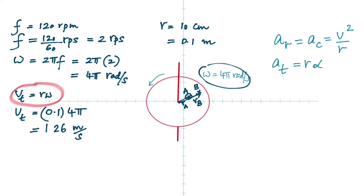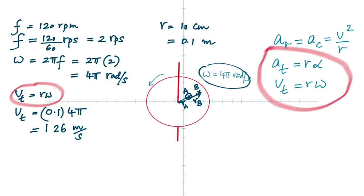Just like linear velocity equals R times omega, tangential acceleration equals R times alpha. We went from angular velocity to linear velocity by multiplying by the radius — do the same. We go from angular acceleration to tangential acceleration by multiplying by the radius. So remember: there are two accelerations — one tangential, and one along the radius.